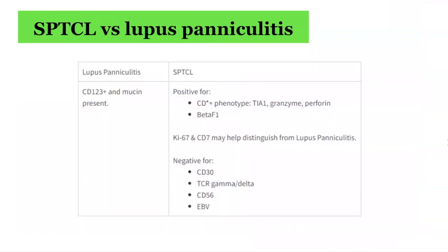One of the most common histological differentials for this condition is lupus panniculitis, and it is often very difficult to distinguish between these two on histology. Subcutaneous panniculitis-like T-cell lymphoma is more associated with a cytotoxic immunophenotype, which is uncommon in lupus panniculitis — this may be a helpful distinguishing feature. It has also been suggested that KI67 and retention of CD7 are more associated with SPTCL. Aggregates of CD123 plasmacytoid dendritic cells, lymphoid follicles with germinal centers, and mucin deposition are more characteristic of lupus panniculitis.